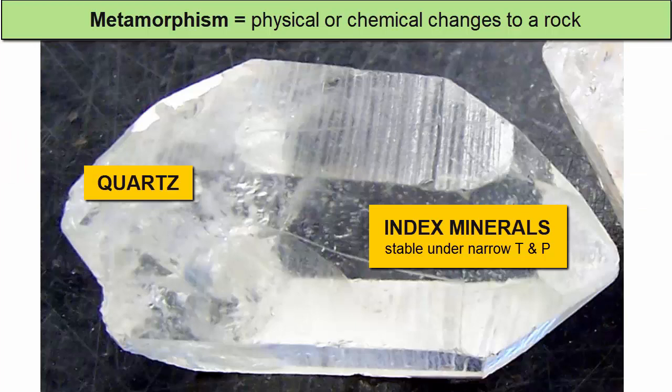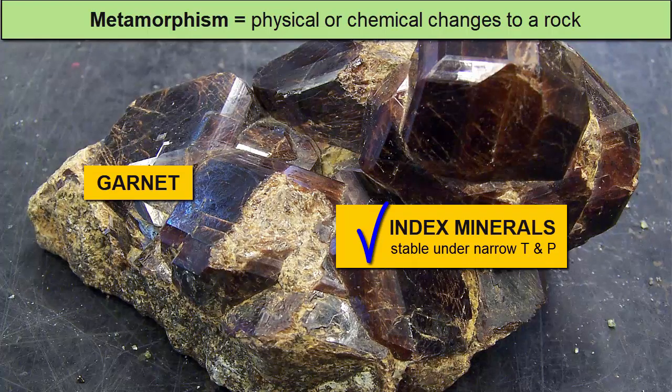For example, quartz is stable under all pressures and temperatures in the metamorphic realm, so finding quartz in a metamorphic rock doesn't tell us much. However, the mineral garnet is stable only at higher pressures and temperatures. So if we find garnet in a rock, we know that it had to be subjected to those higher pressures and temperatures.